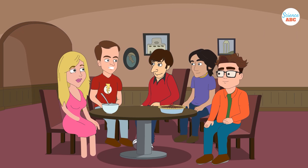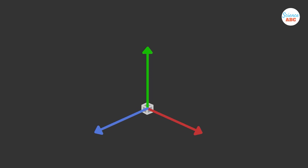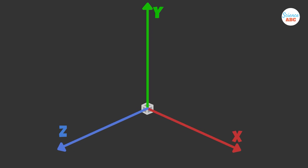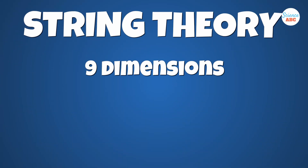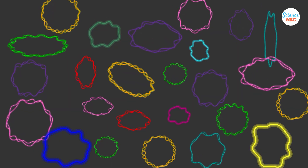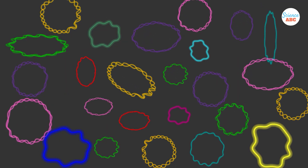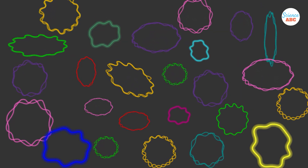To explain how this works, string theory makes an important assumption. While our classical world operates in four dimensions — three spatial dimensions and one of time — the theory suggests that we exist in a universe with either 9, 10, or even 25 dimensions of space. Moreover, these additional dimensions are so tightly curled up that we do not perceive them directly.